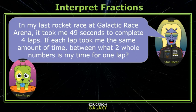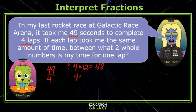Hey little dude! In my last rocket race at Galactic Race Arena, it took me 49 seconds to run four laps. If each lap took me the same amount of time, between what two whole numbers is my time for one lap? Well Star Racer, this is 49 divided by four. I know that four times 12 is 48, so that's close, and four times 13 would be 52. So 49 is in the middle somewhere — it took you between 12 and 13 seconds.